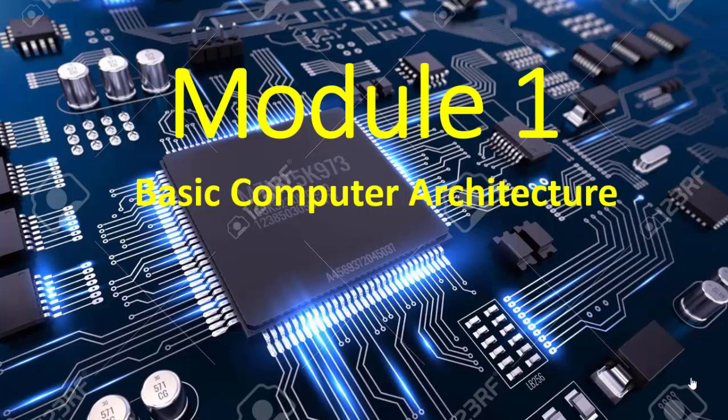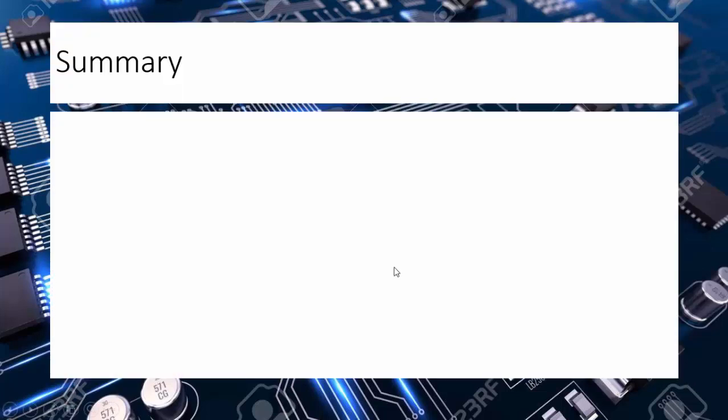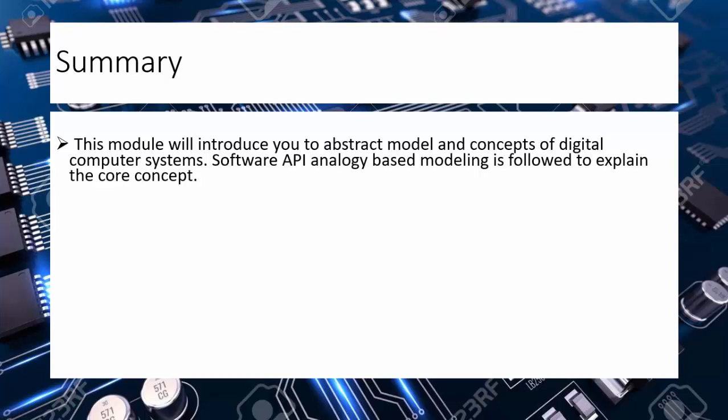Welcome to Module 1, Basic Computer Architecture. This module will introduce you to abstract models and concepts of digital computer systems. Software API analogy-based modeling is followed to explain the core concepts.